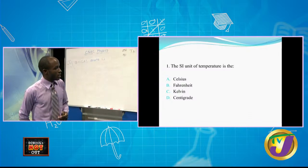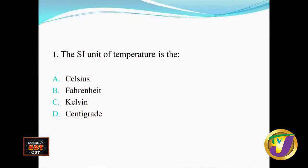For the first question, the SI unit of temperature is — and there are four responses: Celsius, Fahrenheit, Kelvin, and centigrade. The term SI is very important because it speaks to what is the agreed universal unit for temperature. You should already know that Celsius is a unit of temperature, Fahrenheit is one, and you may even come across centigrade. But when it comes to the SI unit of temperature, it is really the Kelvin, which is C, that you should select. Because when you're given your list of fundamental quantities, you should have been given the Kelvin. It's an absolute temperature value; all else are relative scales.